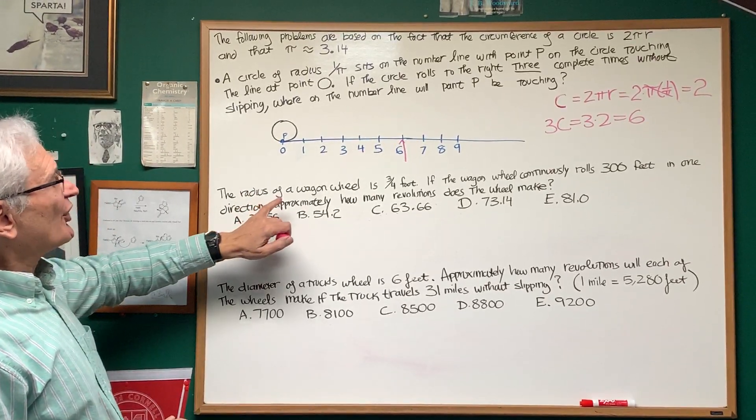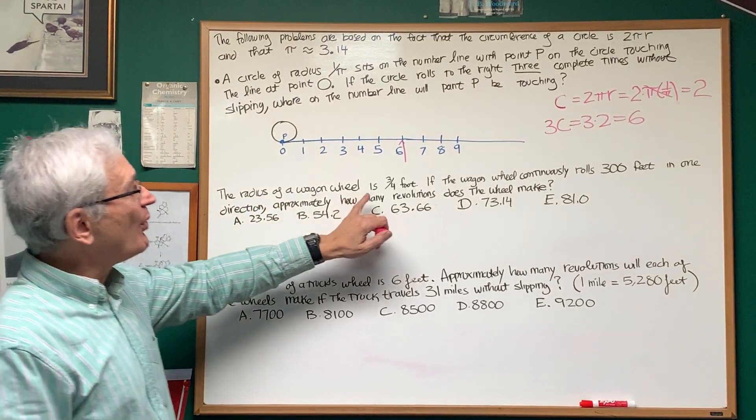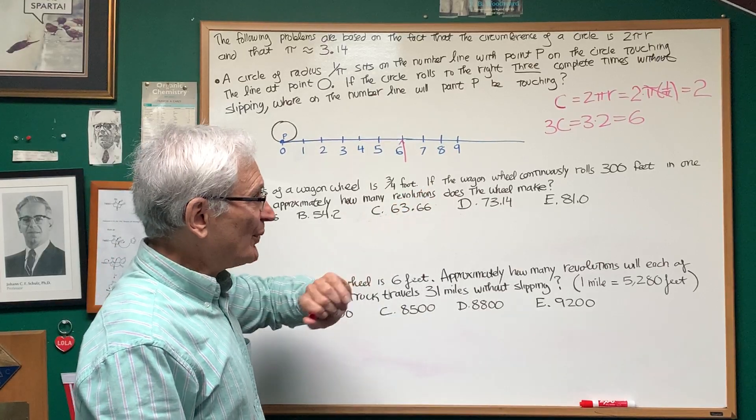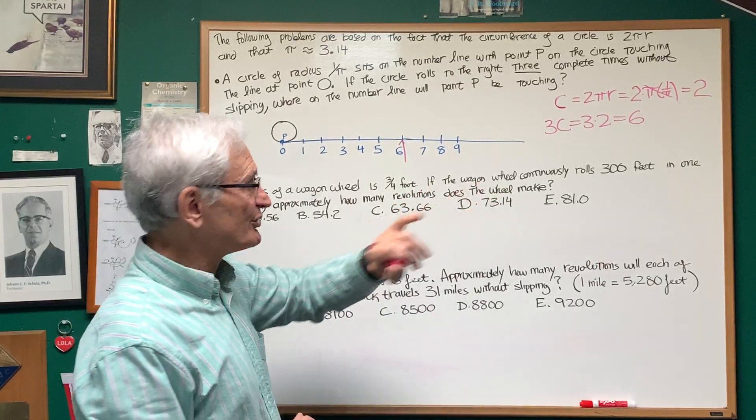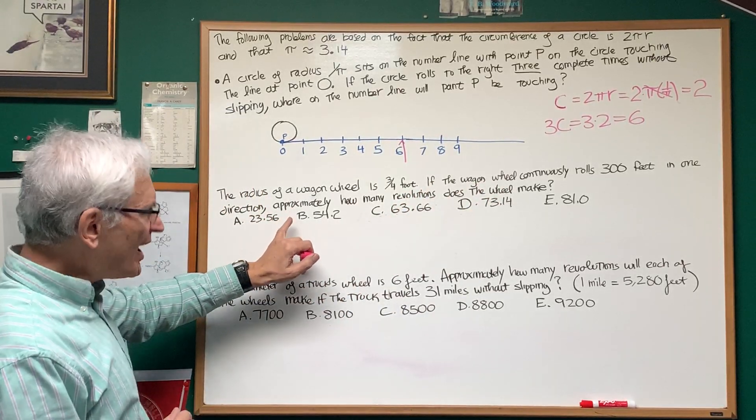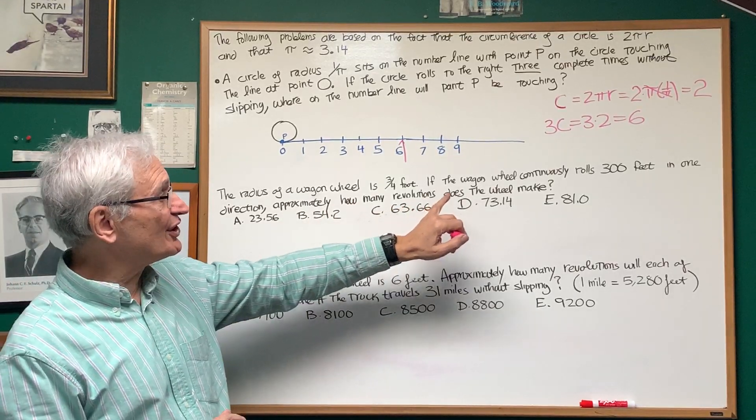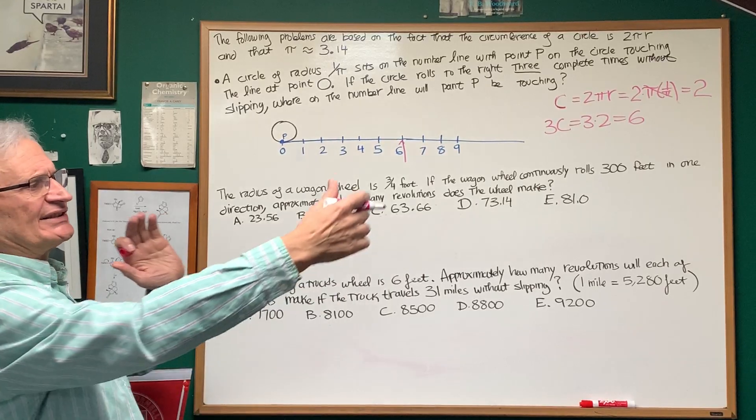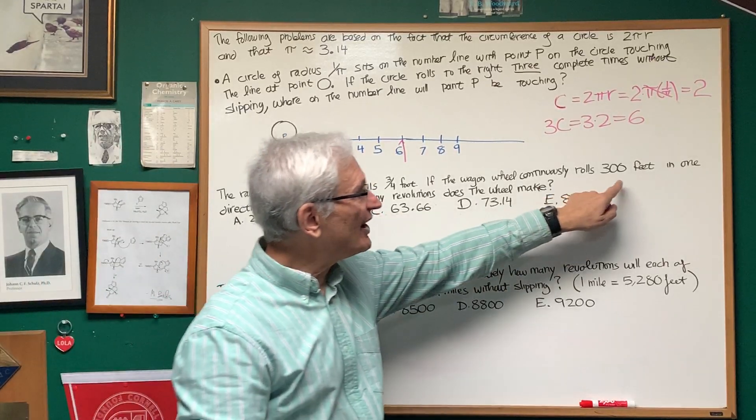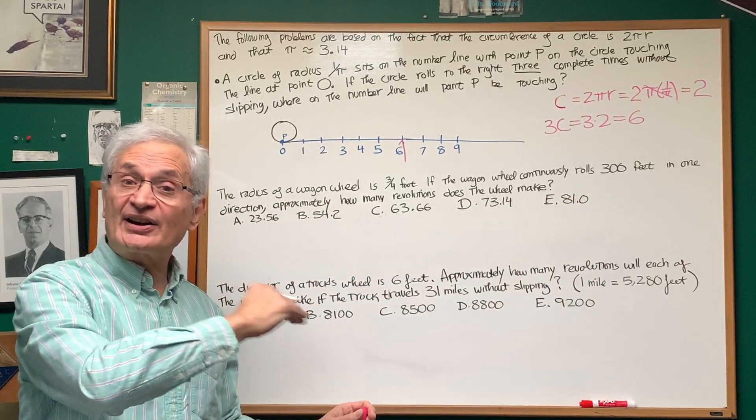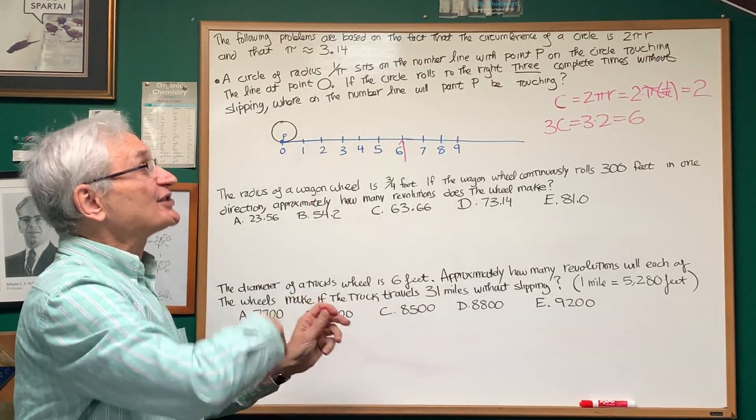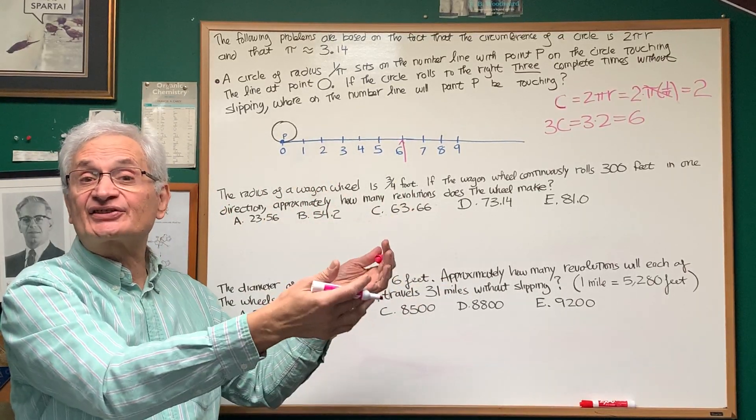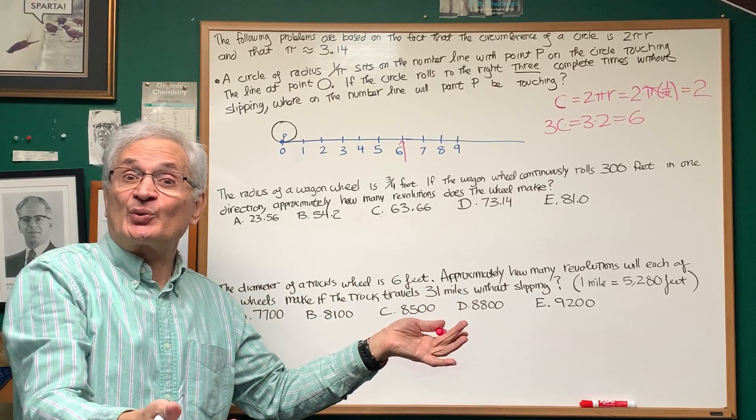Go to the second one. The radius of a wagon wheel is 3 quarters of a foot. If the wagon wheel continuously rolls 300 feet in one direction, approximately how many revolutions does the wheel make? What we want to do is calculate the distance that the wagon wheel rolls, divide it by the circumference. How many circumferences in that distance will give us the number of times the wheel has turned?